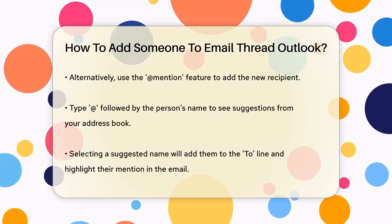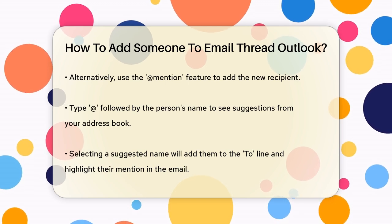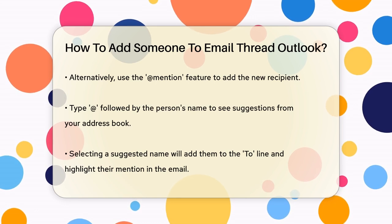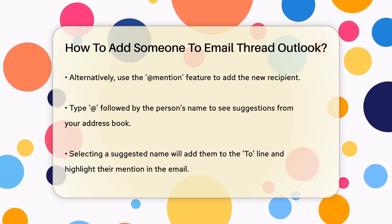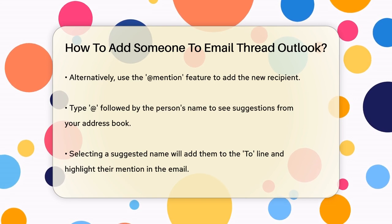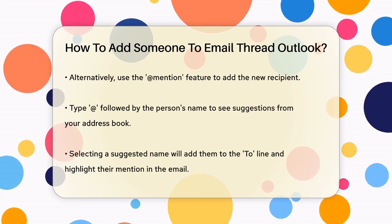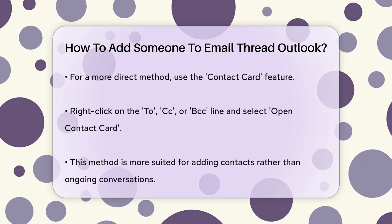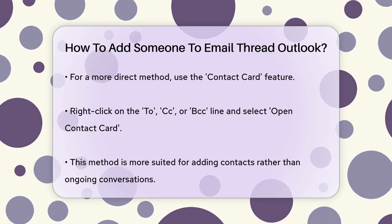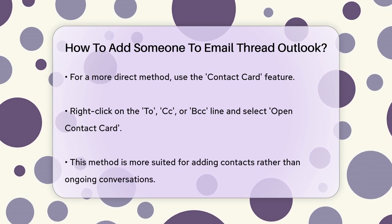Another convenient way is to use the at mention feature. When you're composing your email, type the at symbol followed by the person's name. Outlook will automatically suggest names from your address book, and once you select the correct person, it will add them to the To line of the email. This feature not only adds them as a recipient, but also highlights the part of the email where you mentioned them, making it clear what action they need to take.